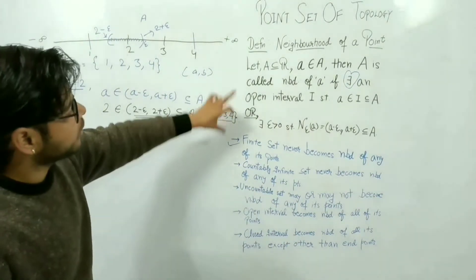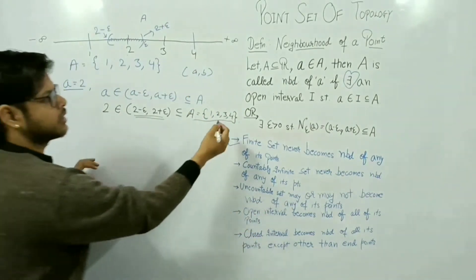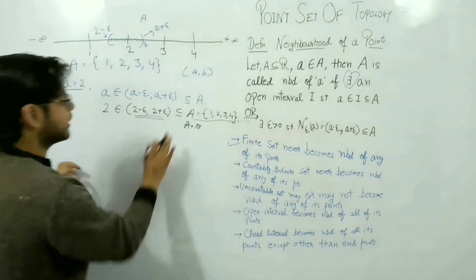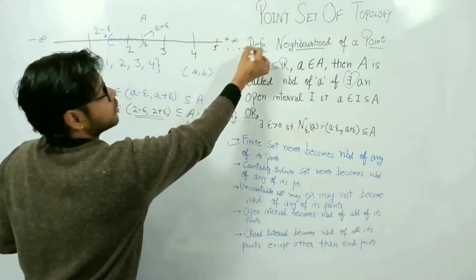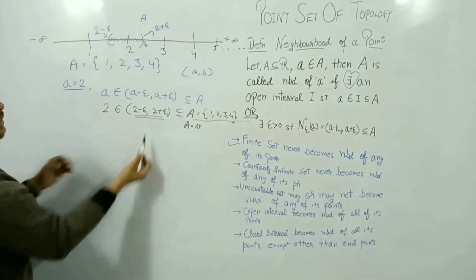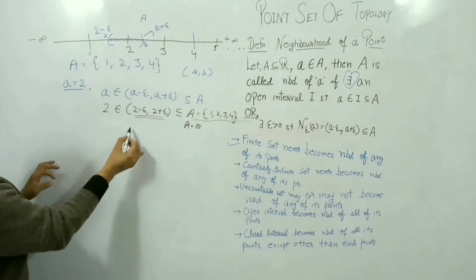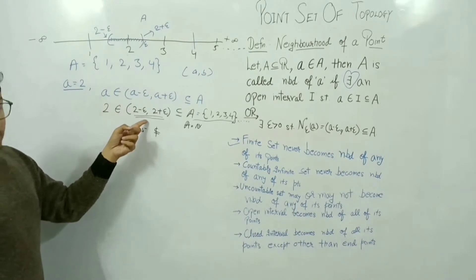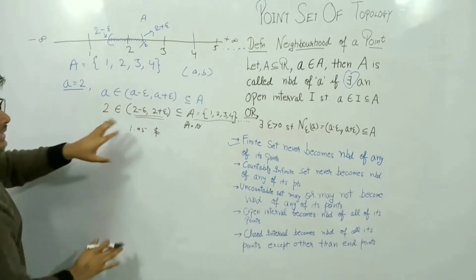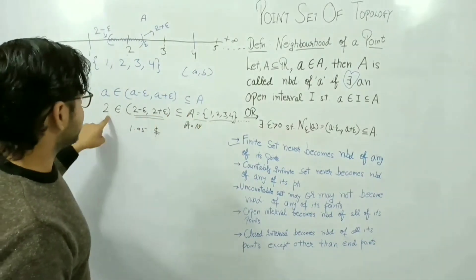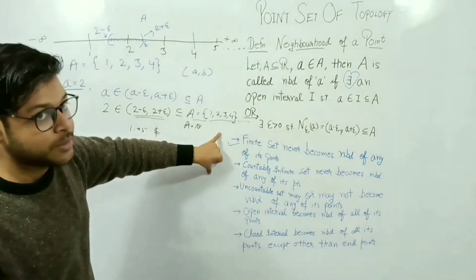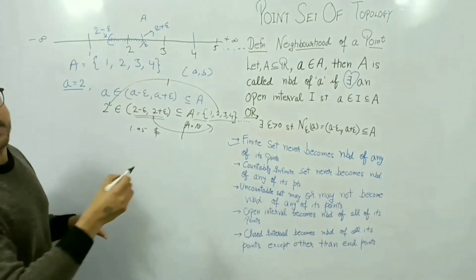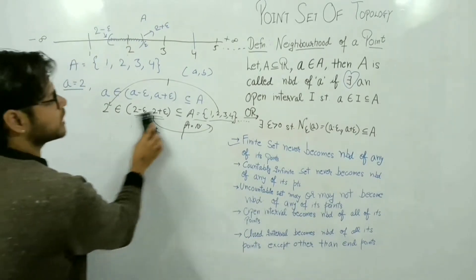No matter what epsilon we choose — whether 0.1, 0.95, or any value — the open interval (2 minus epsilon, 2 plus epsilon) will contain points like 1.95 or 2.95 that are not natural numbers or elements of the set. So the open interval can never be a subset of a finite or countable set of natural numbers.